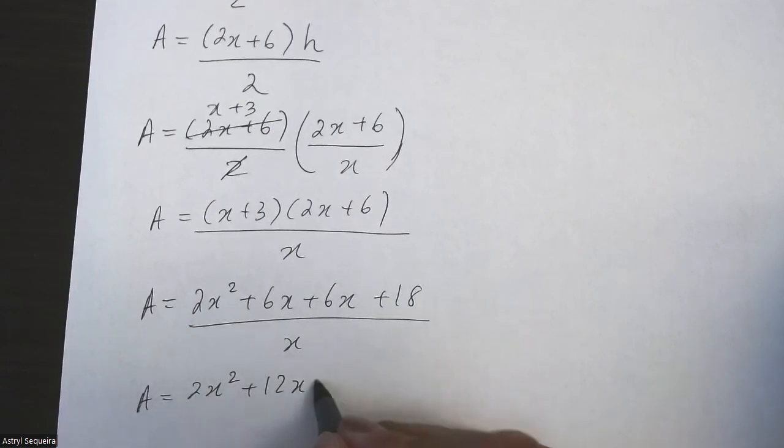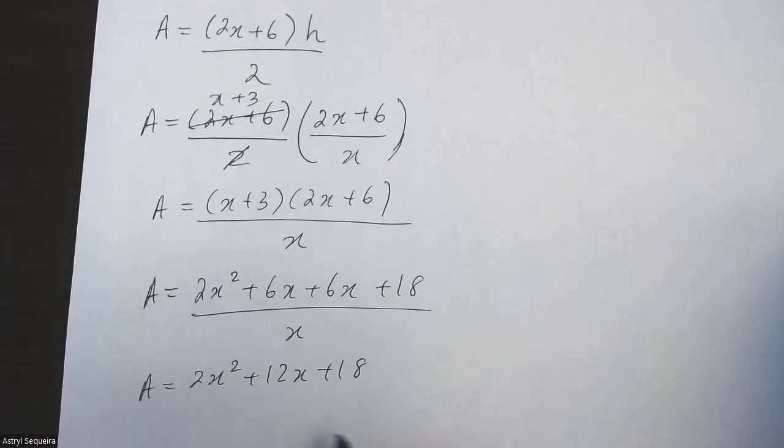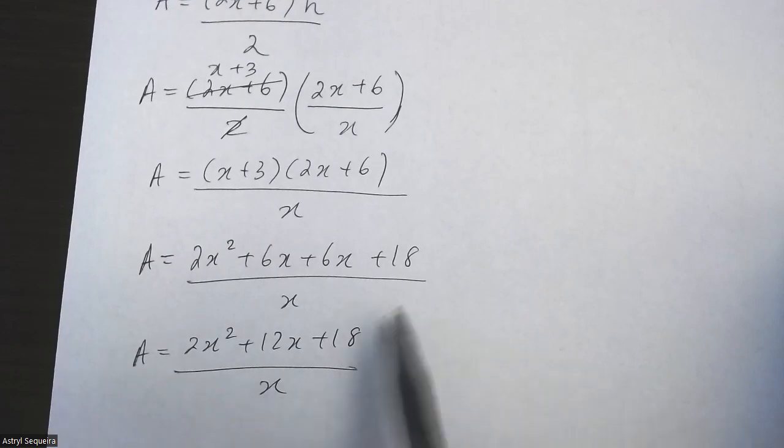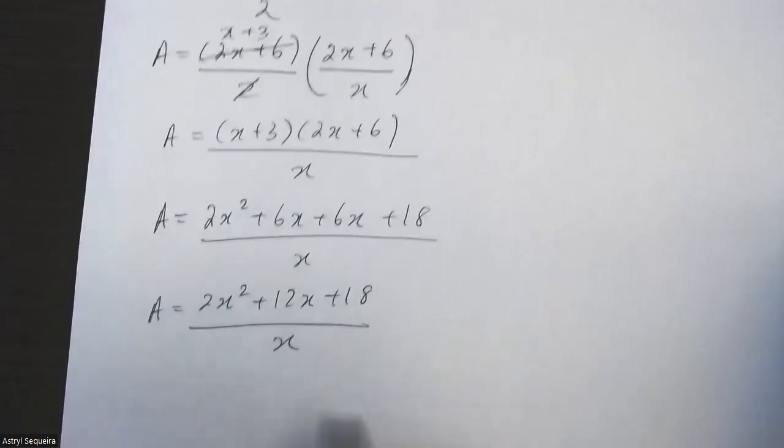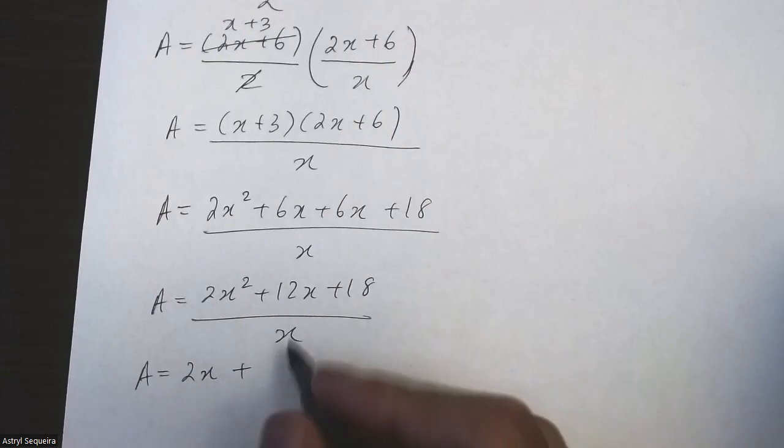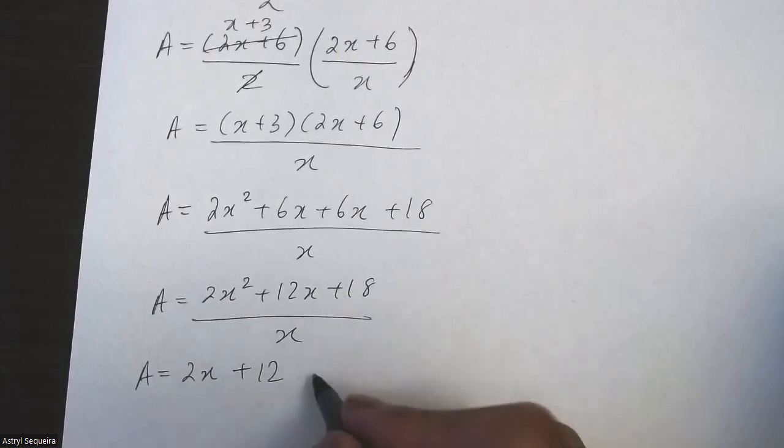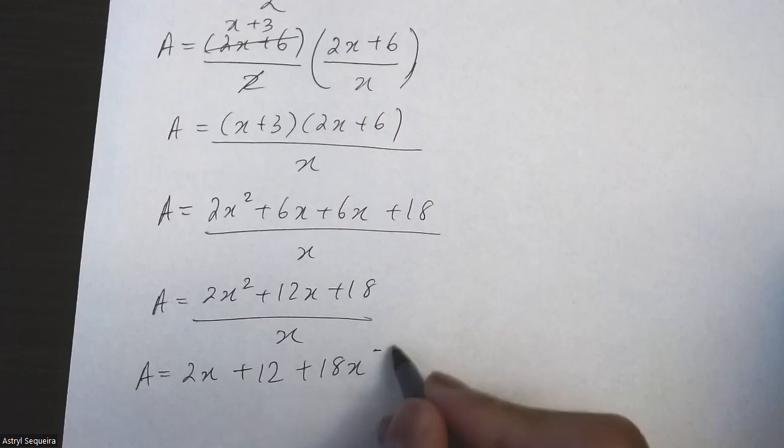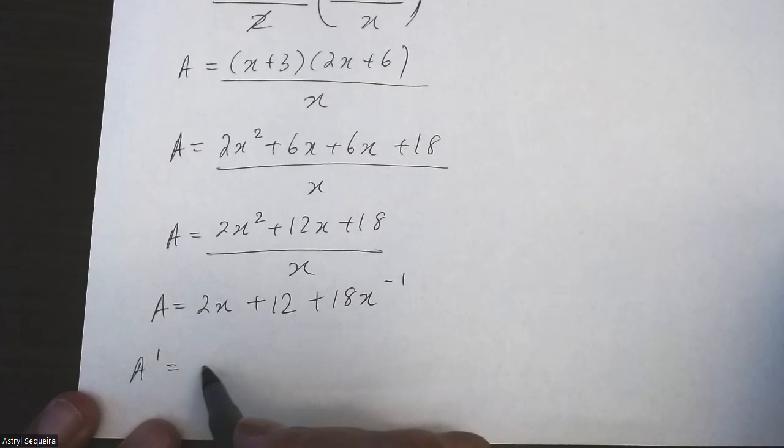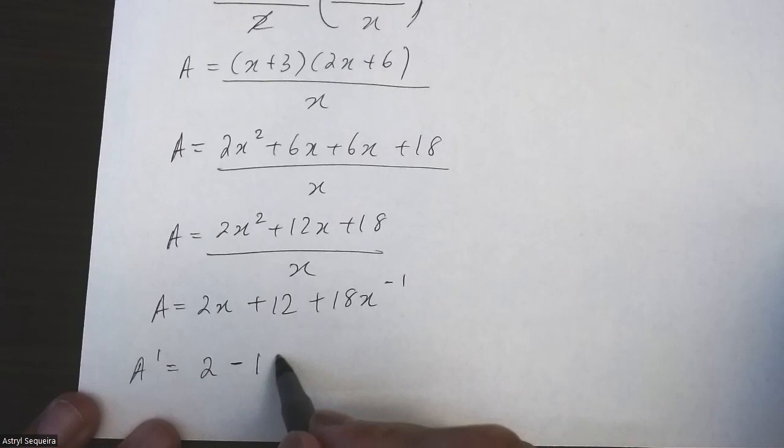So now we want to derive this. There's two ways you can derive it—you can either split the denominator, which I think is easier, or you can use quotient rule. I'm going to split the denominator, so if I divide that, that becomes 2x, this becomes 12, and this becomes 18x to the negative 1. And now we can derive this: A prime is just 2 minus 18x to the negative 2.